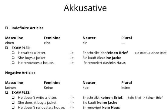So it will be 'einen.' Let's see the example: 'He writes a letter' — 'Er schreibt einen Brief.' Previously with the definite article it was 'den,' I have written it just as a reference. You see that you have to add an 'en' at the end, whether it is the definite article or the indefinite article.